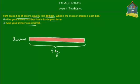Then she divided the onions equally into 10 bags. So she made 10 bags out of 4 kilograms of onions. This was bag number 1, this was bag number 2, this was bag number 3, 4, 5, 6, 7, 8, 9 and 10.